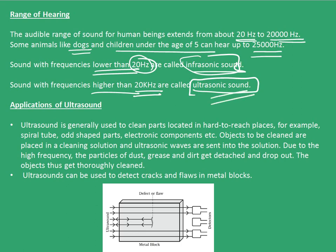Now these ultrasonic sounds are of very much use to us. We have a lot of applications of ultrasound. Ultrasound is generally used to clean parts located in hard to reach places — for example, spiral tubes, odd shaped parts, electronic components, etc. Objects to be cleaned are placed in a cleaning solution and ultrasonic waves are sent into the solution. Due to the high frequency of these ultrasonic waves, the particles of dust, grease, and dirt get detached and drop out. The objects thus get thoroughly cleaned.